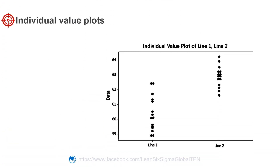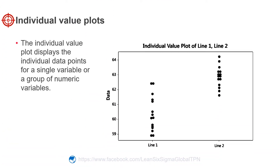The individual value plot displays the individual data points for a single variable or a group of numeric variables. The vertical scale is for the data values. The points are spread out in the horizontal direction to allow us to see all the individual values,